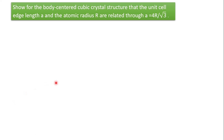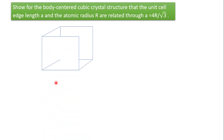Let's start by drawing the structure — that is, one unit cell of BCC. As you know, it is cubic, so let's try drawing it. This is the structure of the BCC, and we are going to analyze it one by one.